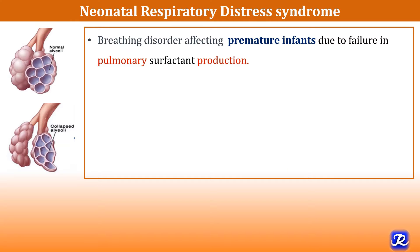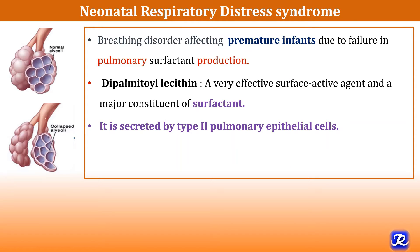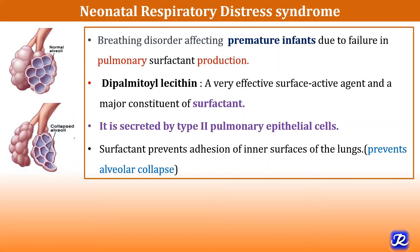What is surfactant? It is a liquid composed of dipalmitoyl lecithin in combination with specific proteins and other phospholipids like phosphatidylglycerol and phosphatidyl inositol. Dipalmitoyl lecithin is the major constituent of surfactant and is a very effective surface-active agent. This surfactant is found in the extracellular fluid surrounding the alveoli of the lungs, where it decreases surface tension to prevent lung collapse during breathing. It is secreted by type 2 pulmonary epithelial cells and prevents adhesion of the inner surfaces of the lungs.